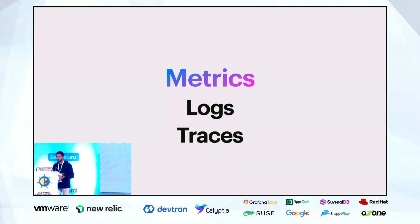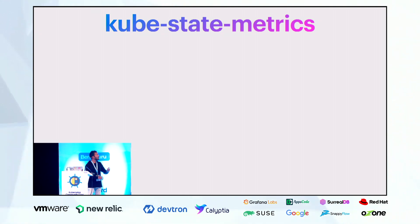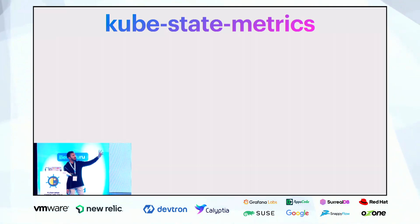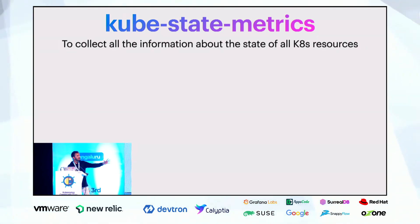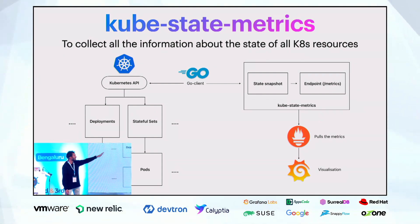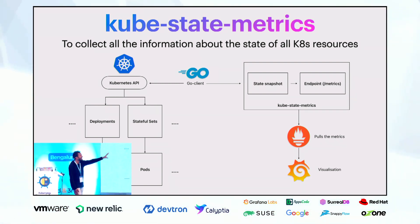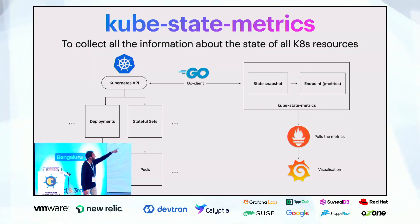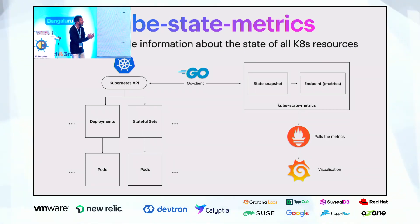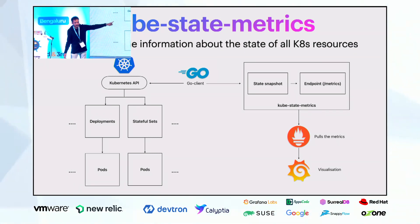Digging deeper into metrics, there are three important metric sets: kube-state metrics, node exporter metrics, and cAdvisor metrics. Kube-state metrics collects information about the state of all Kubernetes resources. It uses a Go client — a Kubernetes API client — which listens to the Kubernetes API, takes a state snapshot of all resources, and exposes it to a /metrics endpoint. We then use Prometheus to pull those metrics.